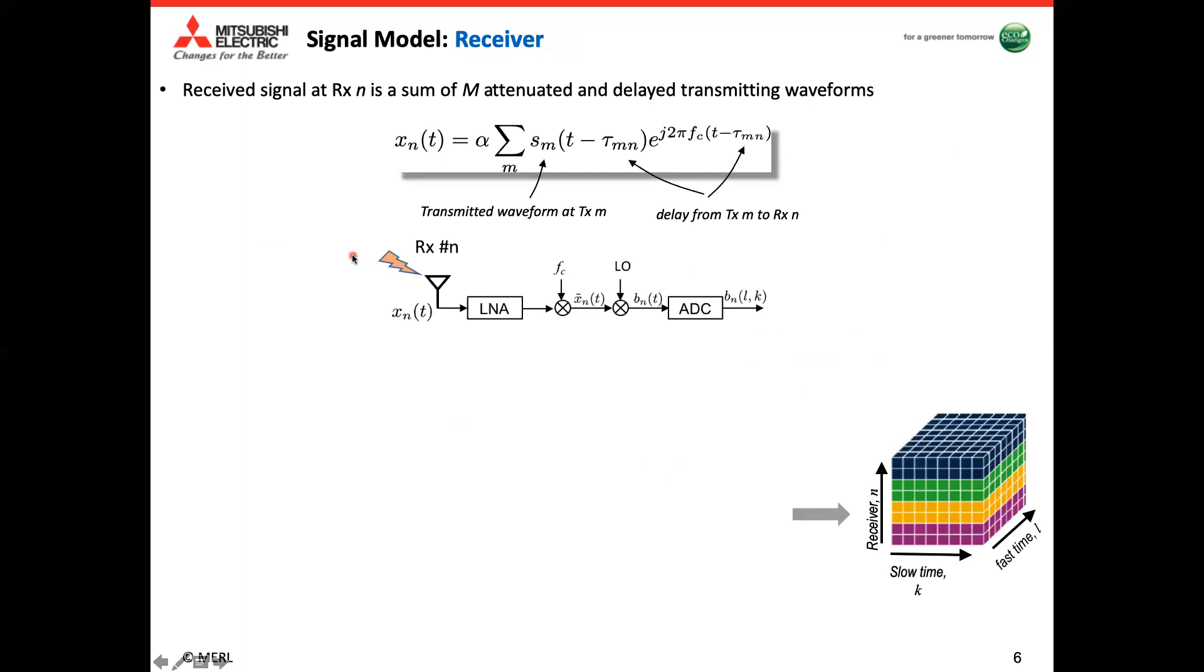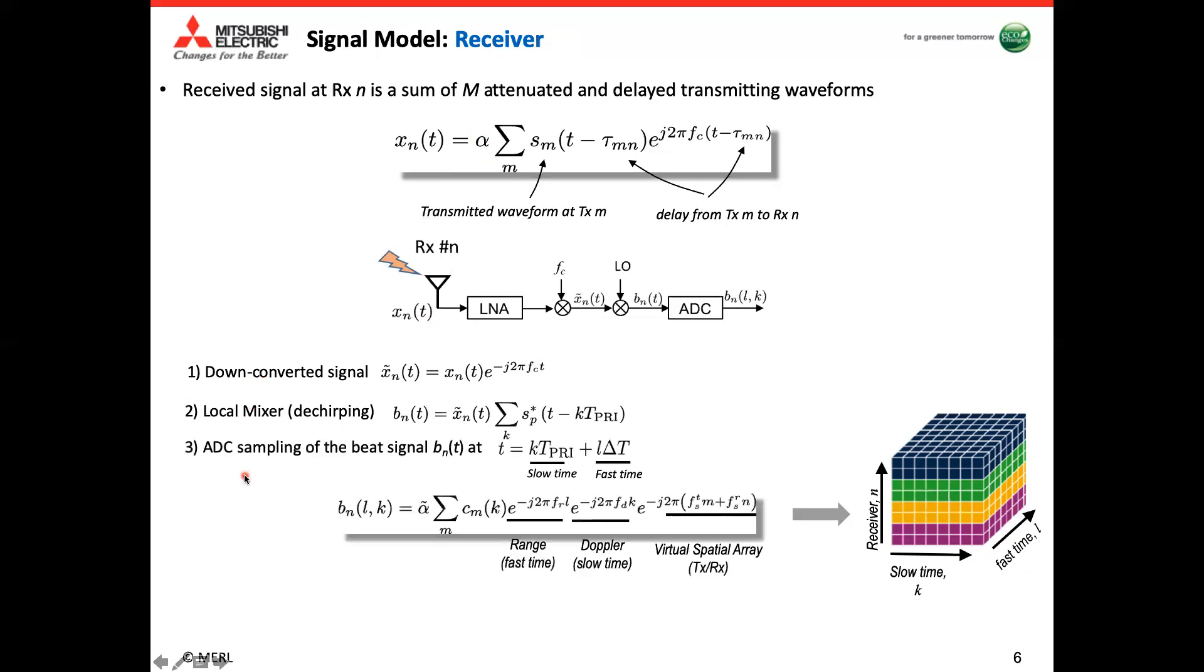At the receiver side, the received signal, say the receiver n x_n(t), is just the sum of m attenuated and delayed transmitting waveforms s_m(t), but with some delay tau_mn from m's transmitter to the n's receiver, with some object amplitudes. So then this s_m(t) will go through the standard processing, like down converting, de-chirping, and digital sampling at the slow time and the fast time for the beat signal.